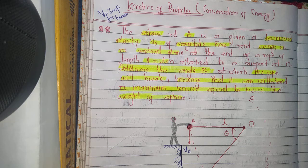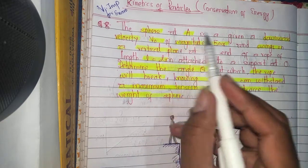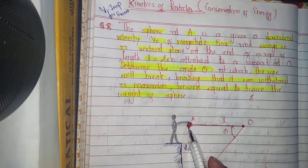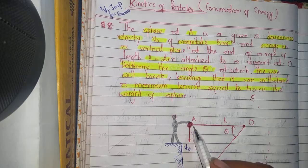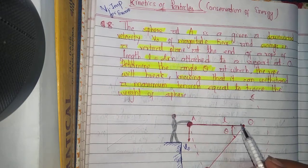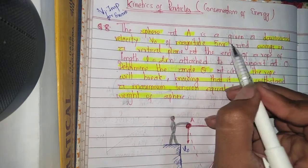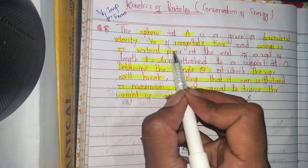Hello everyone, today we are going to discuss the numerical on kinetics of particles — conservation of energy — which is very important for exams. Our question goes like this: the sphere at A is given a downward velocity V naught. Here is sphere A, and this person is giving motion to the sphere in a downward direction. This sphere is attached to a center point with magnitude 5 meters per second, and swings in a vertical plane.